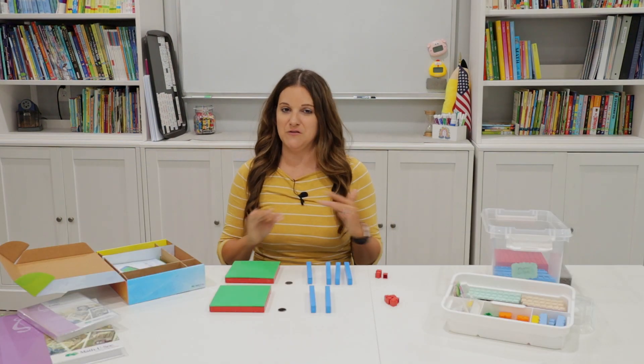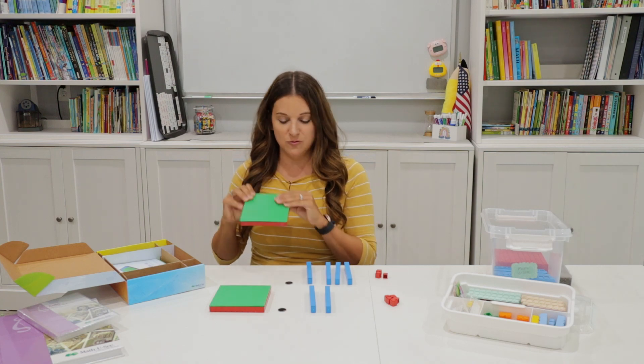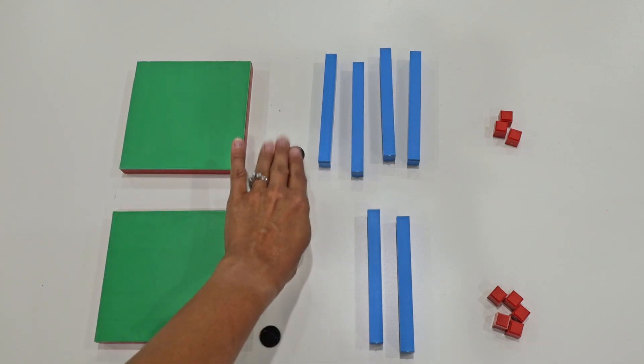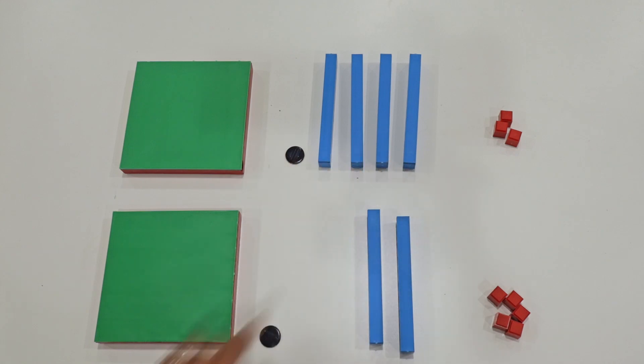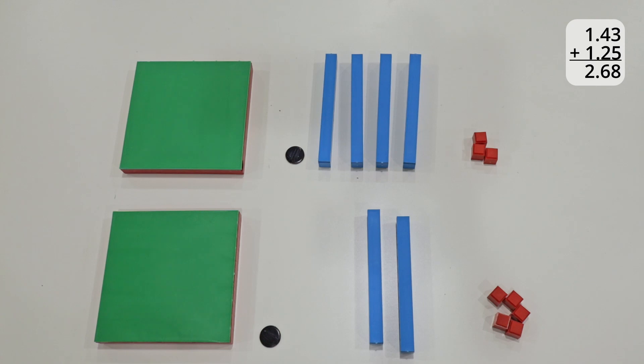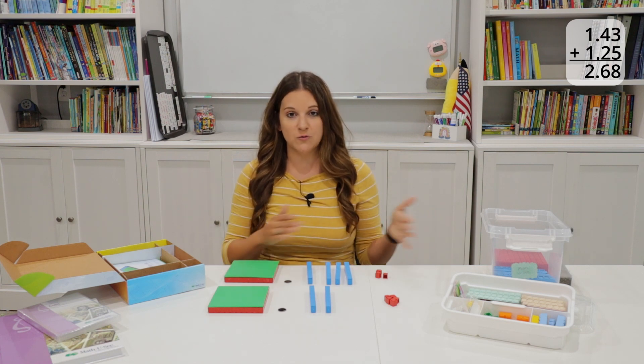So starting first with a real simple problem, I have here a single one. It's that nice smooth green side. My decimal point that I added—just these little black circles—and then I have forty-three hundredths. It might be easier just to say one dollar and forty-three cents. And on the second row, I have another smooth one and I have twenty-five hundredths. So we can just say one dollar and twenty-five. So I'm adding up the one dollar and forty-three cents plus one dollar and twenty-five cents.